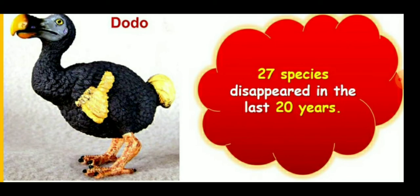In the last 20 years alone, we have witnessed the disappearance of 27 species. For example, the dodo in Mauritius.